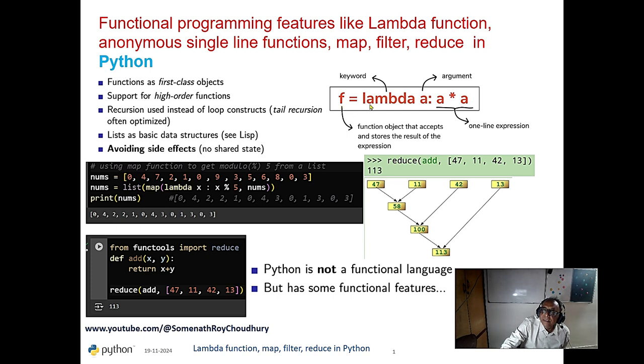This is the lambda function. No name of this function, anonymous. That is called anonymous functions. And that is the difficulty also. You should not use lambda function here and there. Because it's anonymous, if there is any error, you cannot debug it.